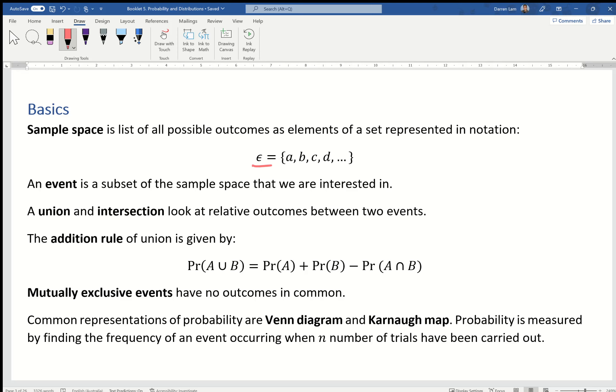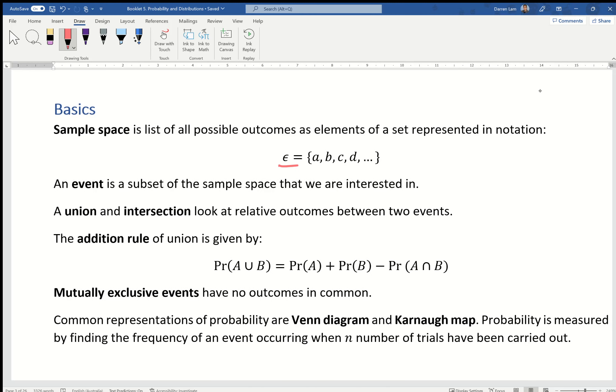An event is a subset of the sample space. We need to make sure we know the union and intersection and the difference between them. Union is represented by a U, and intersection is represented by an upside down U. Union is all values that exist in either, whereas intersection is values that exist in both, explicitly both.